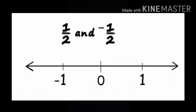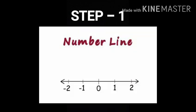To do so, we need to follow following steps. We will begin by plotting 1 upon 2. Step number 1: Draw the number line like this. Now, fractional number 1 upon 2 has to lie somewhere between 0 and 1 because numerator is smaller than denominator.